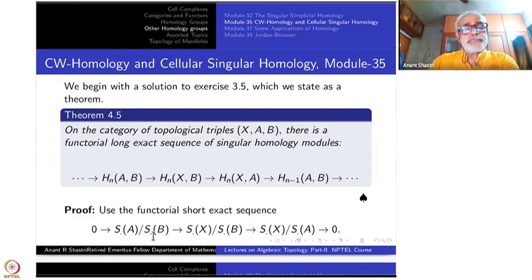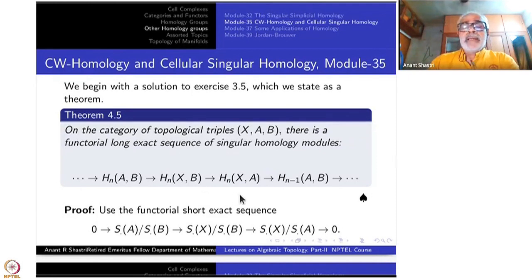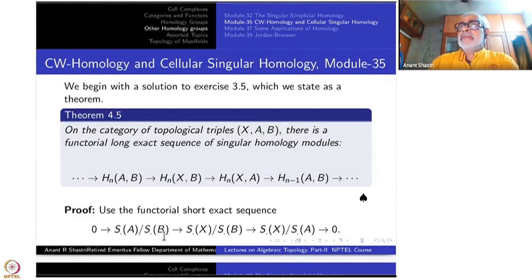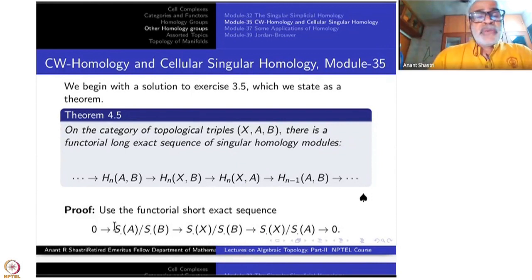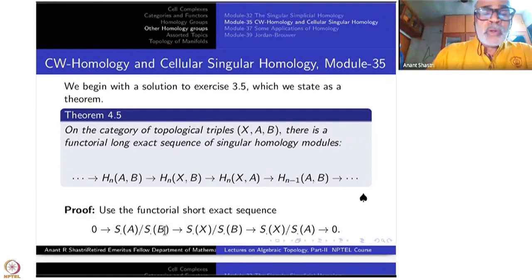Namely, look at S(B), S(A), and S(X). Since one sits inside the other, S(X) is the largest and contains S(A) as a sub-complex, which contains S(B) as a sub-complex. Therefore, S(A) modulo S(B) becomes a chain complex — the quotient complex. Similarly, S(X) modulo S(B) is also a chain complex. By the ordinary isomorphism theorem of abelian groups, S(A)/S(B) is a sub-complex of S(X)/S(B), so there is an inclusion-induced homomorphism from S(A)/S(B) to S(X)/S(B).